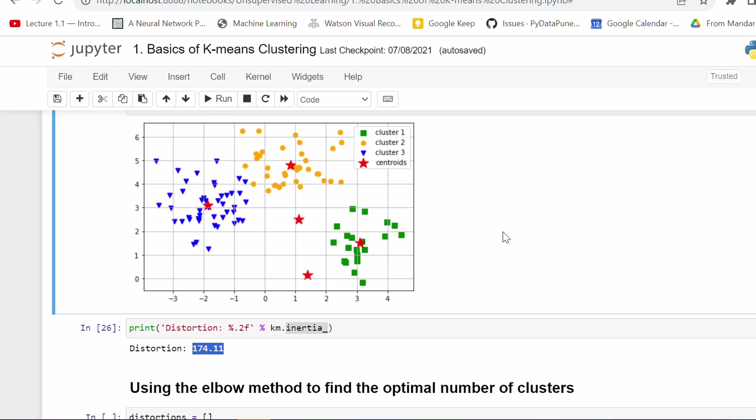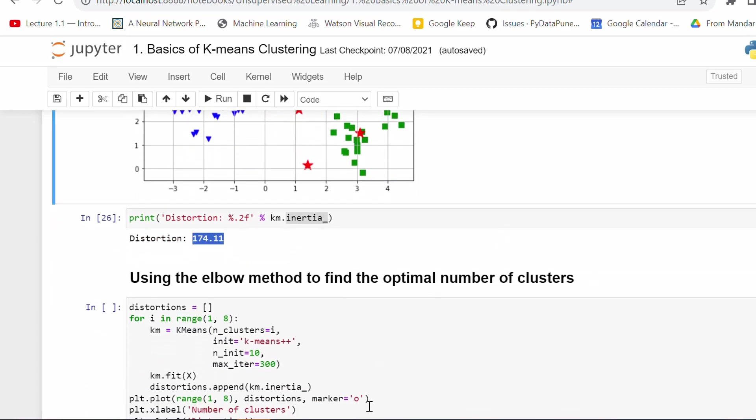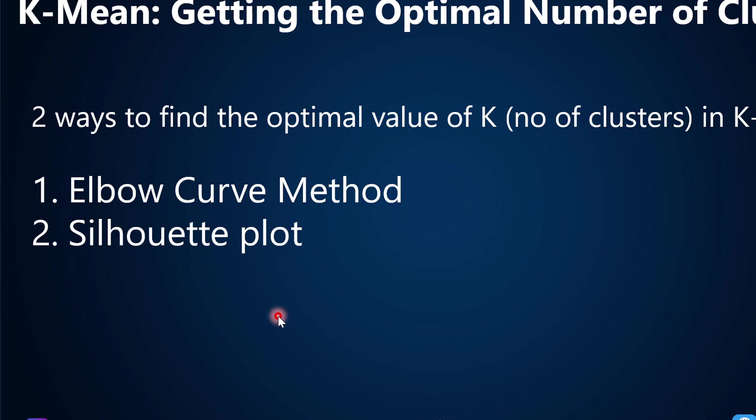But visually you can see that. In real scenarios, when you have millions of rows, millions of data points, how will you know what is the value of K? This is really important in K-means clustering. To identify the optimum number of clusters, we have certain methods. We have two ways to find the optimum value of K. First way is called elbow curve method, and the second way is silhouette plot.